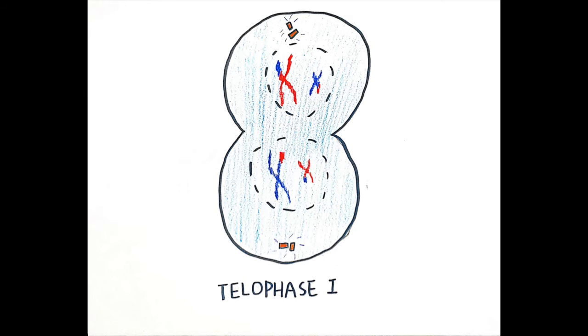During telophase I, the chromosomes are enclosed in nuclei. The spindle disappears and the nucleus reforms around each set of chromosomes.